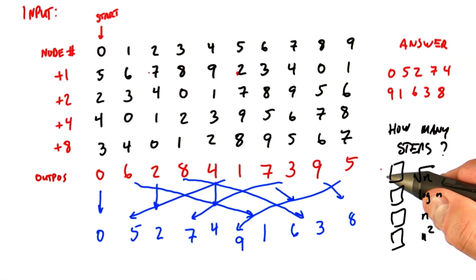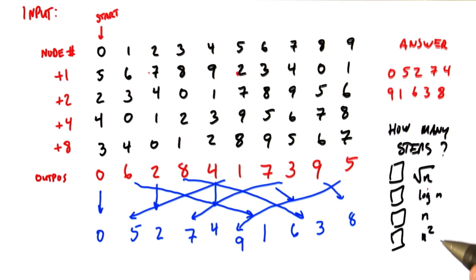So as a function of n, how many steps does this take? Square root of n, log n, n, or n squared?